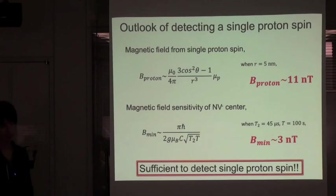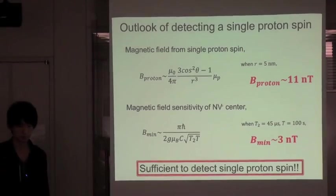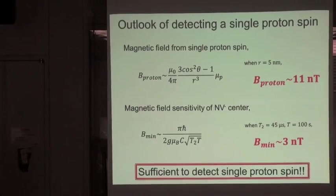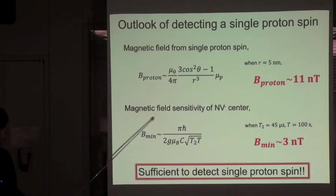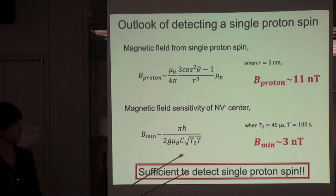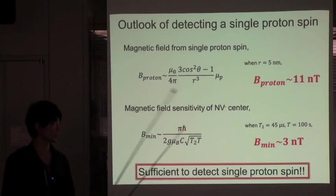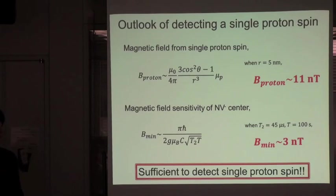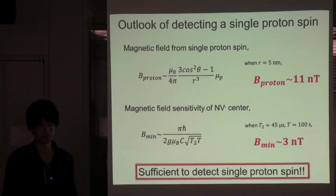Next, let's consider the magnetic field sensitivity of NV center. Magnetic field sensitivity is, as I said before, given by this formula. When the T2 value is 45 microseconds and total measurement time is 100 seconds, the sensitivity is 3 nT.